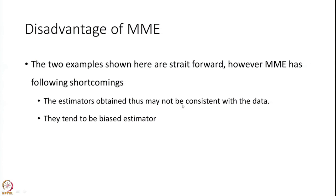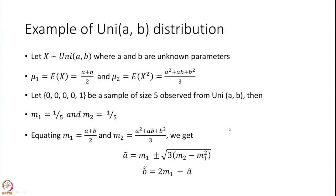Sometimes method of moments estimators are inconsistent with the data, and they also tend to be biased estimators — which we will define later. Here I would like to show that it may not be very consistent with the data that you have got. The example I will use has been picked up from Wikipedia, and I have given the reference at the end. You are also welcome to go through it — it gives a very good description of method of moments.